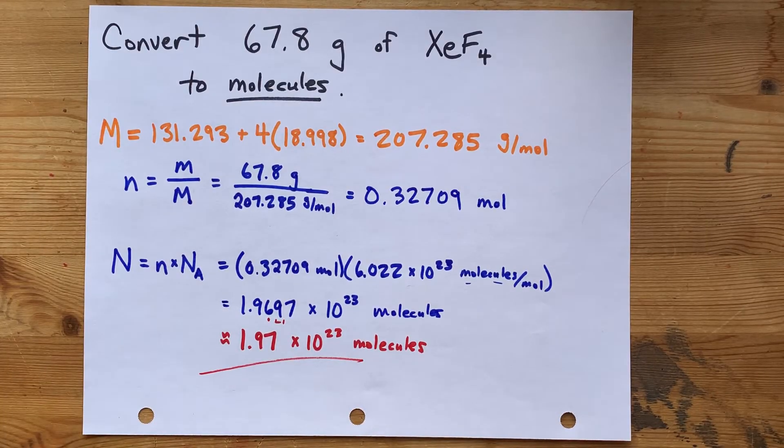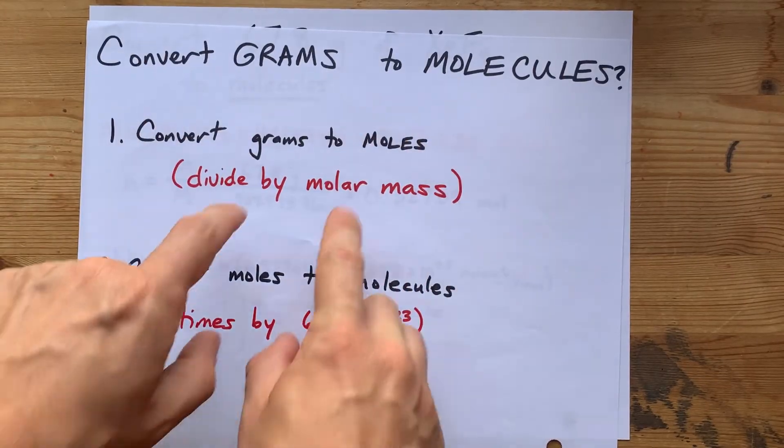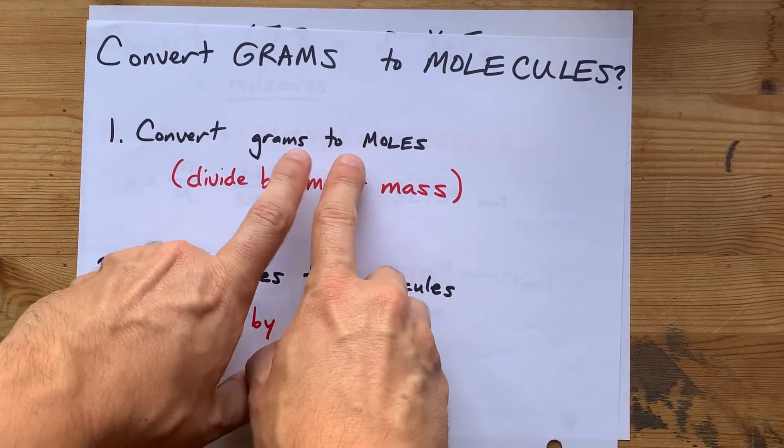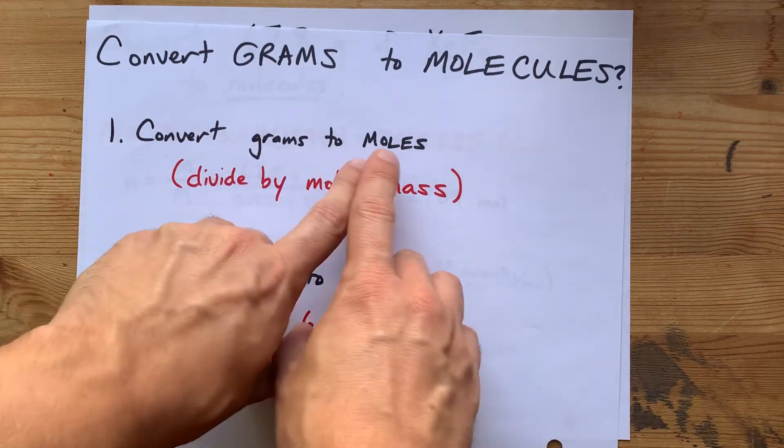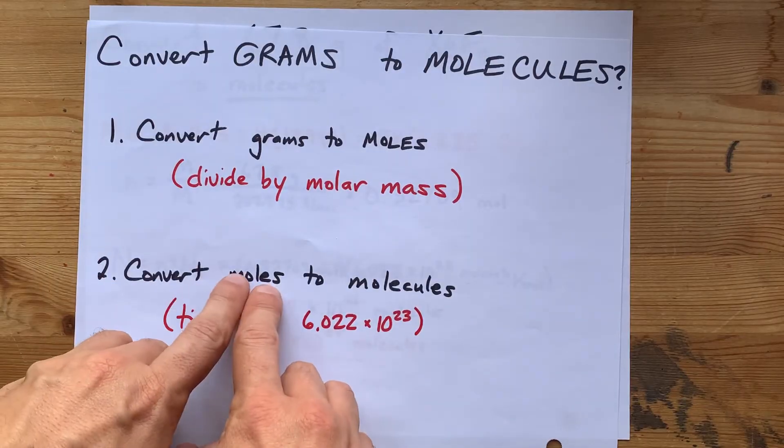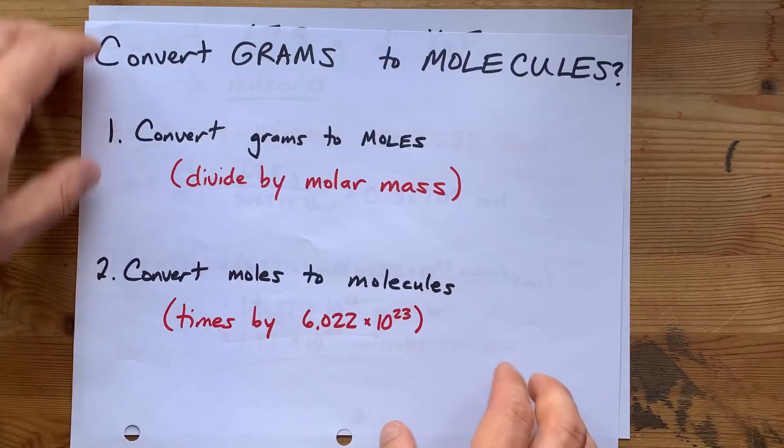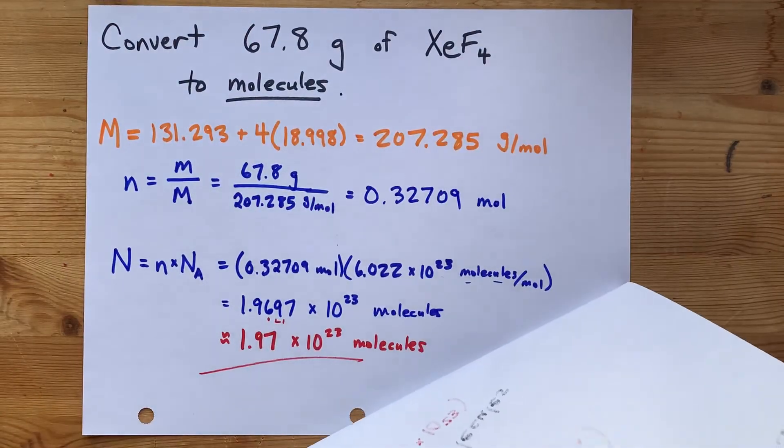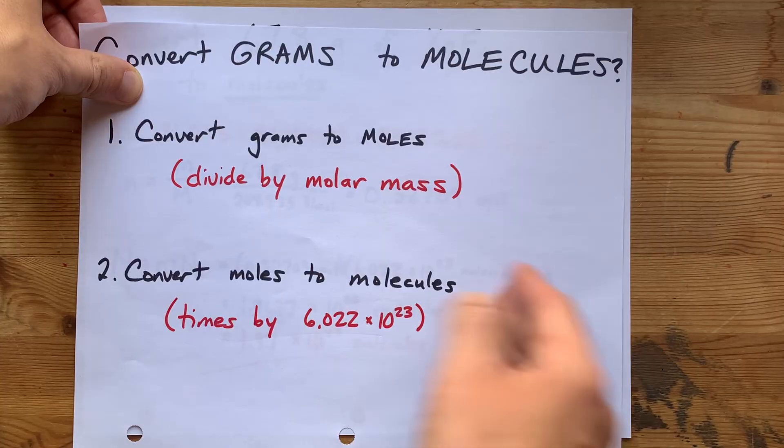And what really matters for this video is that converting grams to molecules is easy. As long as you convert grams to moles by dividing by molar mass and converting that same number of moles to molecules by timesing by Avogadro's number. Thanks for being with me. Hopefully, this simplifies your calculations and life. Best of luck.